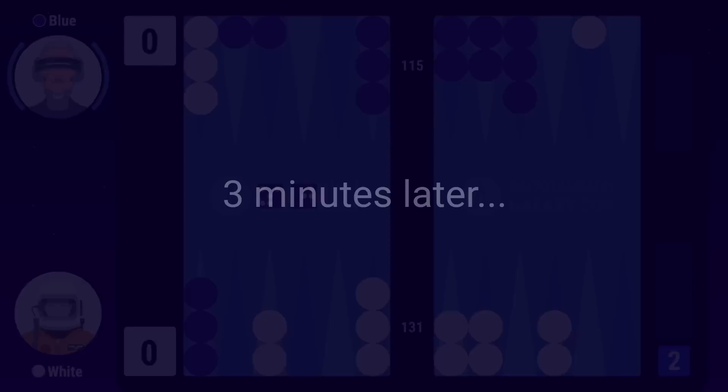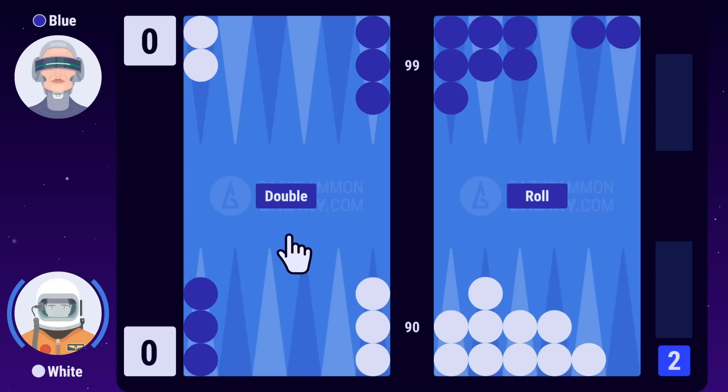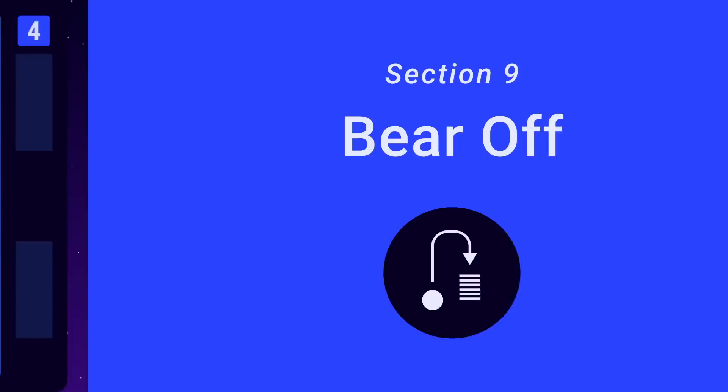Blue makes her roll. The situation has turned, and white now has a slight advantage in the game. Only the owner of the cube can make a redouble, which is what white decides to do. Blue takes, and they continue the game with even higher stakes.